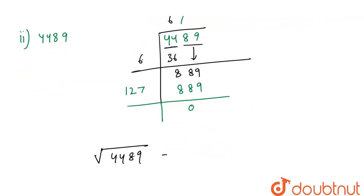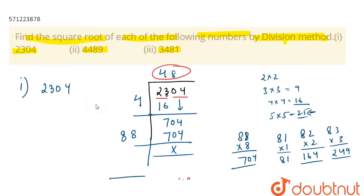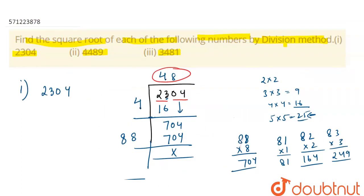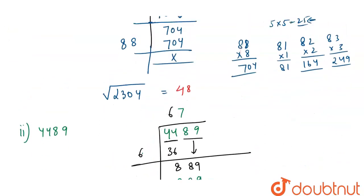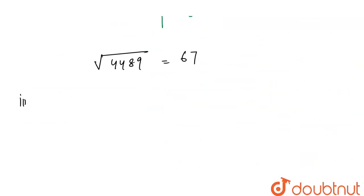Now let's move to the third question, that is 3481. Here third question says we have to find the square root of 3481. Solving it using division method, here we have 3481. Again making pair of 2. So here we have 34 and 81. We will use 5×5, which is 25. Subtracting this, we get 14 minus 5, that is 9, and here we have 81, taking these two pairs down.